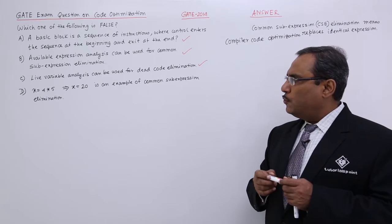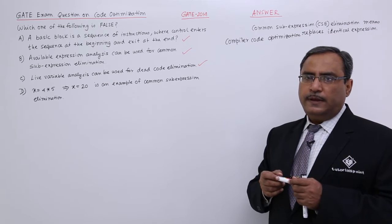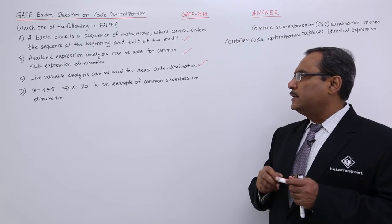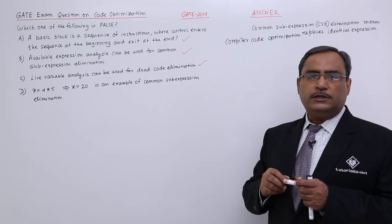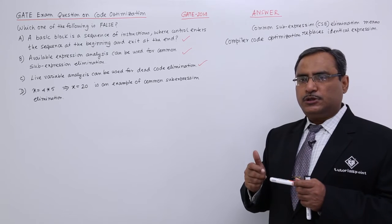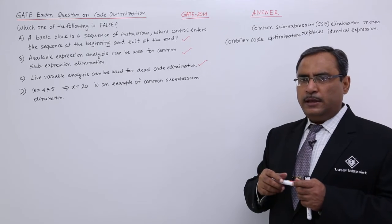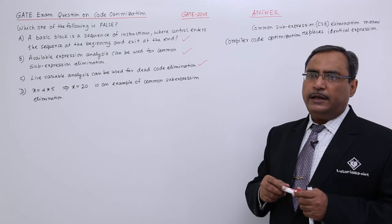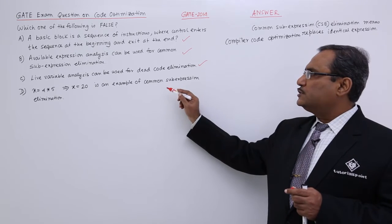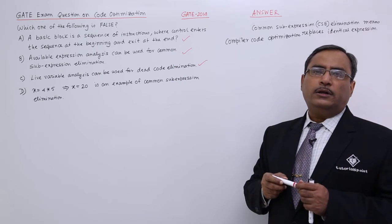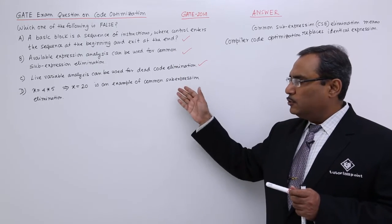x is equal to 4 star 5, it has been replaced by x is equal to 20, is an example of common sub expression. It is not an example of common sub expression. In case of common sub expression, the same sub expression might occur in multiple expressions and there we are going for optimization by eliminating it. So this particular statement is false and they were asking which one was false. So that is why my answer will be D.